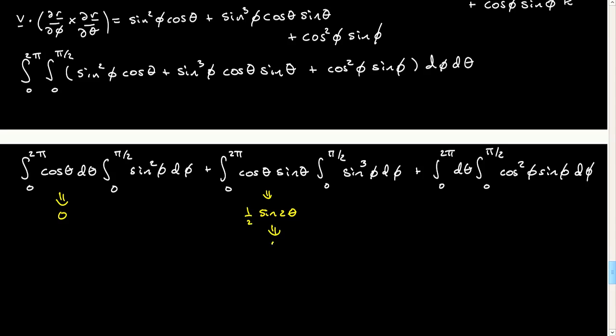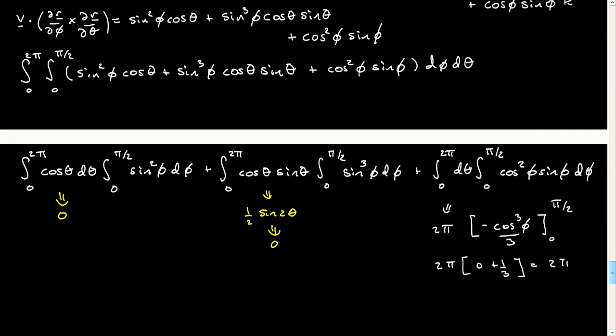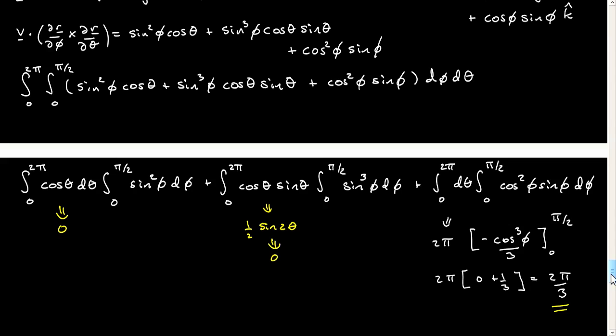And now we have a nice situation. This is simply, of course, two pi. Now, we have something we can easily integrate, and we'll get two pi on three. Okay, so that's the answer. Oh, and I forgot to say something. All right, so there's nothing so interesting in the answer.